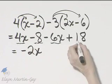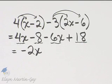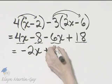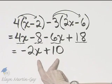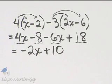Then these two are like terms. They're constants. Negative 8 plus 18, that is positive 10, so I'll write plus 10. I can go no further because these are unlike terms, and I've simplified.